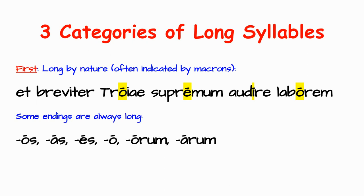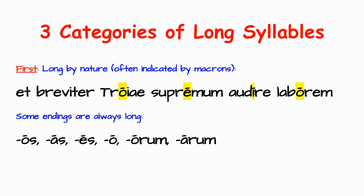The first kind of long syllables — and this is the easiest, at least with the texts that we use, which use macrons on these syllables — are the ones that are long by nature. These are sounds that just for that given word happen to be long. Looking at this line from the beginning of Book 2 of the Aeneid, where Aeneas is telling Dido 'and briefly to hear the final struggle of Troy,' these are the ones marked long. Not all texts use long marks, and certainly they didn't back in Virgil's day. But we can see there are certain endings that are always going to be long — accusative plural endings.